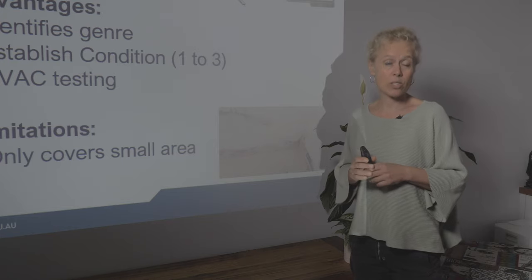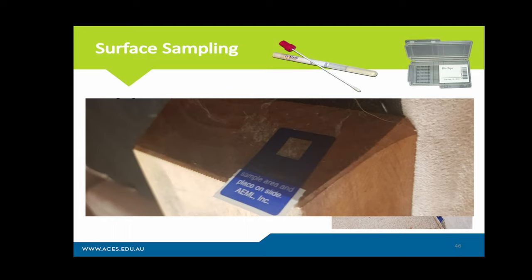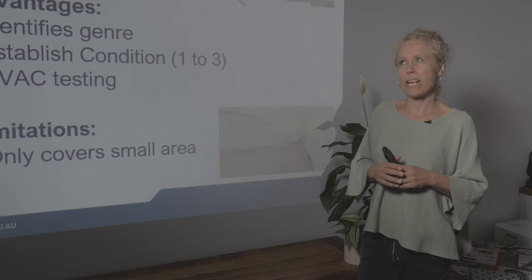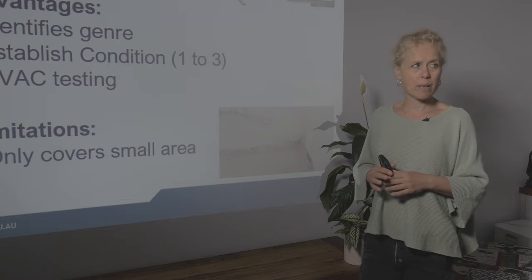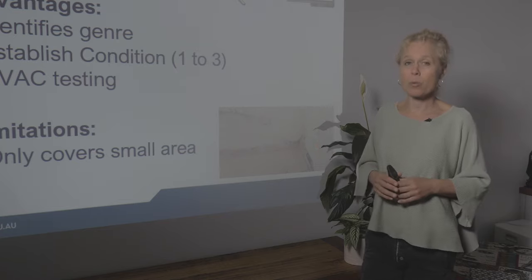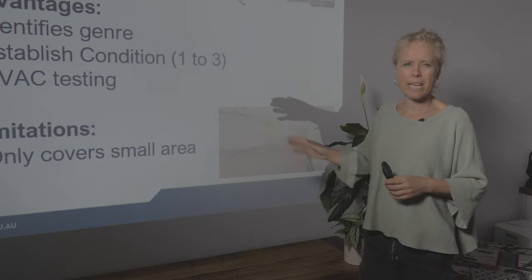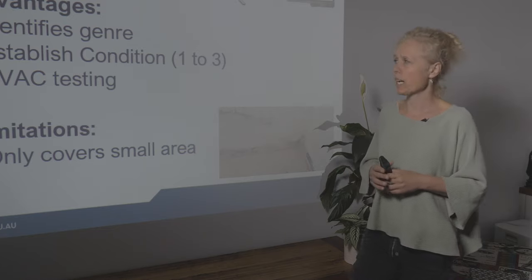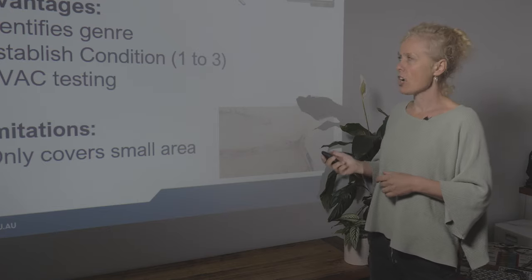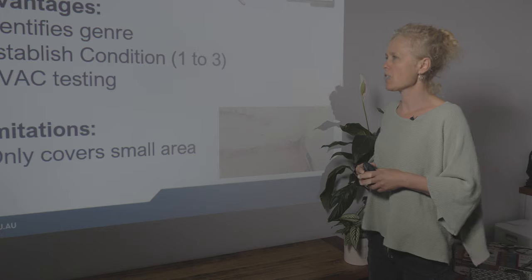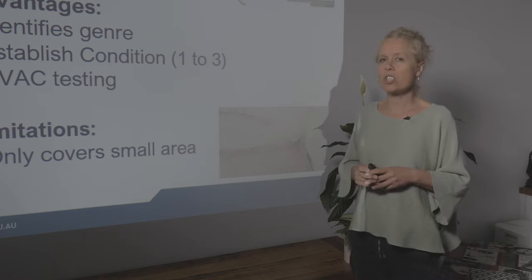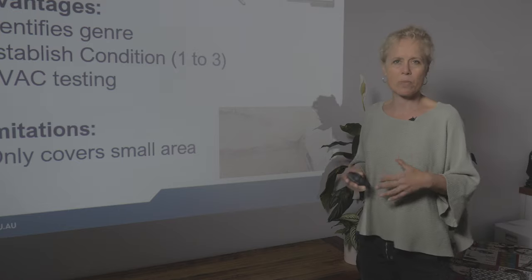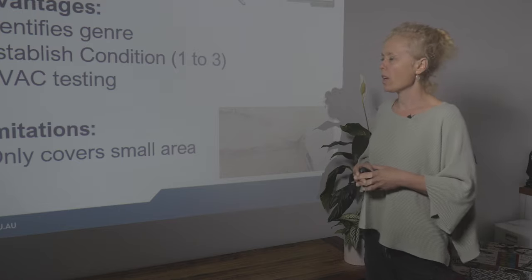Surface sampling is really important. You've got to do surface samples in order to determine how to remediate. If you find high levels of pathogenic fungi in the air sample, surface sampling in that room is important to know whether it needs to be HEPA-sandwiched — which we'll talk about in remediation. Surface sampling identifies the type of fungi, the genus — Aspergillus, Penicillium, etc. — and establishes the condition: condition one is normal fungal ecology, condition two is high settled spores, condition three is visible mould and actual growth.